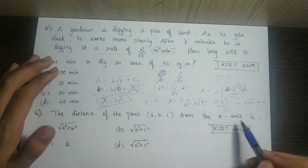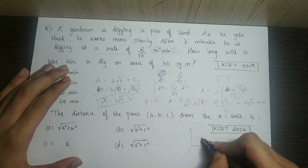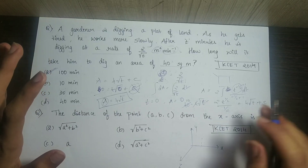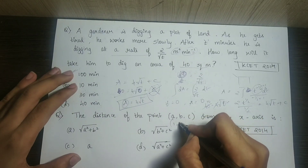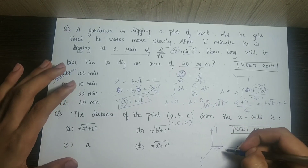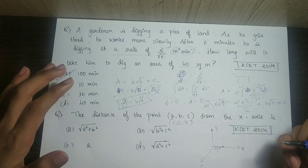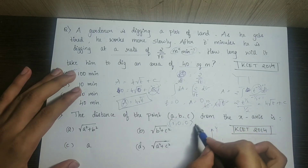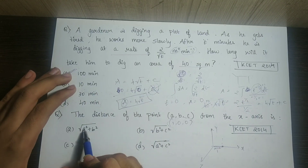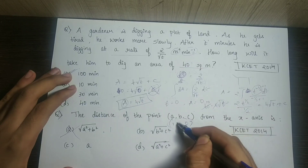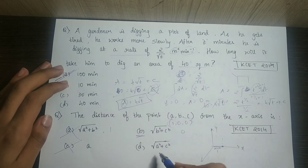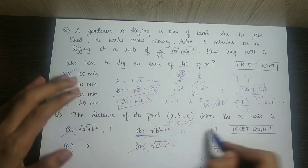The next question: the distance of the point (a, b, c) from the x-axis in 3D space. A point (a, b, c) has coordinates x, y, z. The distance from the x-axis is root of b squared plus c squared. Checking the options: a squared plus c squared doesn't work; option B with root of b squared plus c squared is correct.